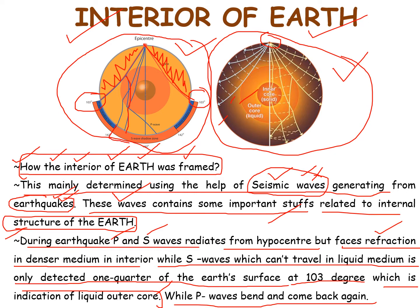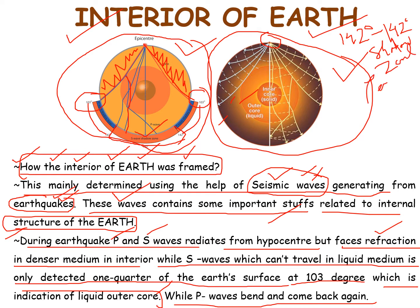The portion from 102 degrees to 142 degrees is the shadow zone where seismic waves do not move. Similarly, there is a shadow zone of 103 degrees to 142 degrees for the P waves. So we should remember that within 102 to 142 degrees there is a shadow zone for S waves, and 103 to 142 degrees is the shadow zone for P waves.